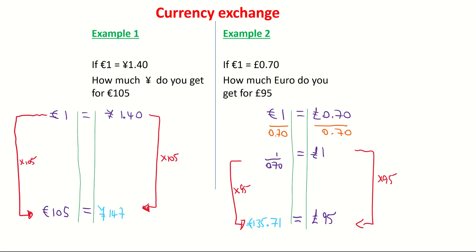So that's the value of 95 pounds in euro. So there are two examples of how to convert between currencies.